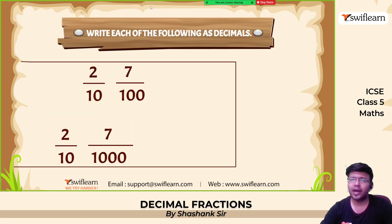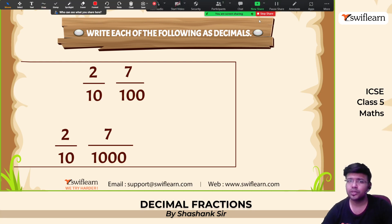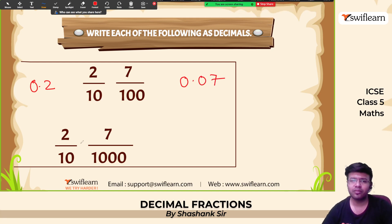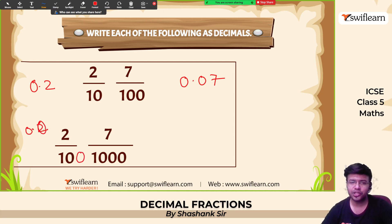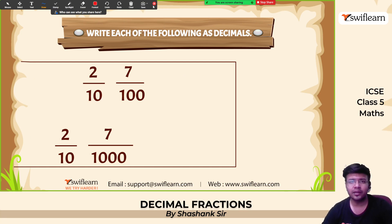Now write each of the following as decimal numbers. 2/10 can be written as 0.2. 7/100 can be written as 0.07. 2/10 is again 0.2. If I change it to 2/100 it becomes 0.02. And 2/1000 is 0.002. This is how we write these.